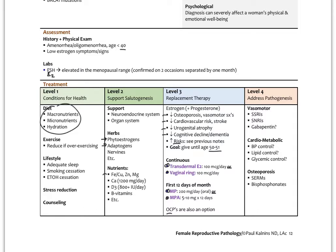Level four therapies address symptoms of low estrogen. Emerging therapies for vasomotor symptoms include SSRIs, SNRIs, and sometimes gabapentin — though this is not an approved use. SSRIs and SNRIs work through serotonin and norepinephrine chemistry to help with mood changes from low estrogen. Cardiometabolic management may involve blood pressure, lipid, and glycemic control depending on labs. Osteoporosis management may involve SERMs or bisphosphonates.